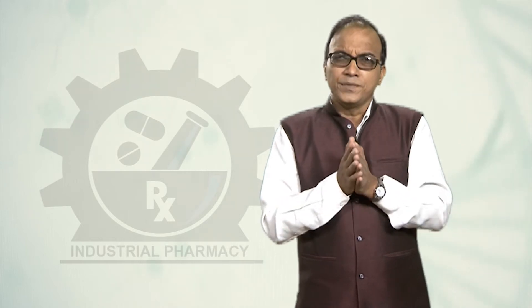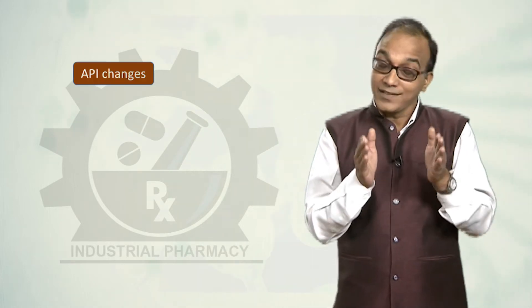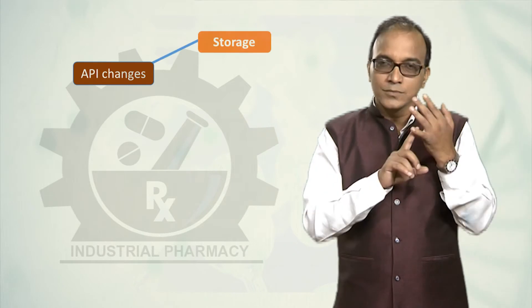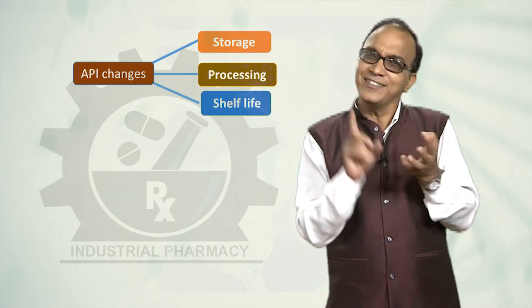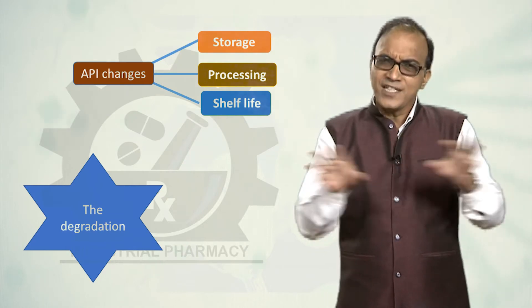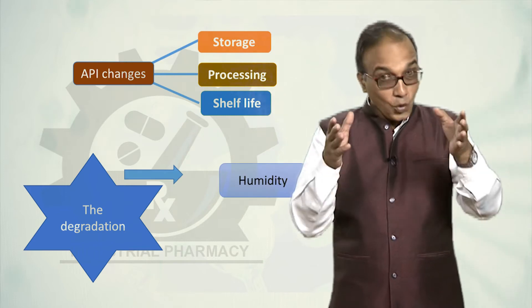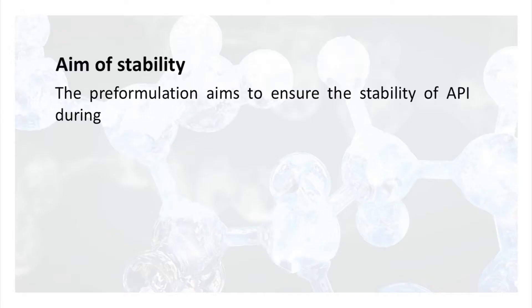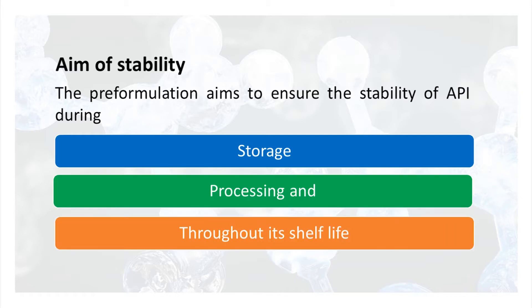When discussing pre-formulation, the first thing to keep in mind is that the API is likely to undergo changes due to many chemical reactions over time — during storage, during processing, and during shelf life. The degradation through various chemical reactions is triggered by factors like temperature, pH, humidity, and light. Pre-formulation aims to ensure the stability of the API during storage, processing, and shelf life. Now let us see the major chemical reactions one by one.